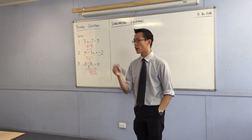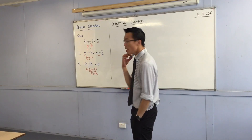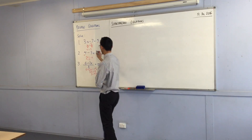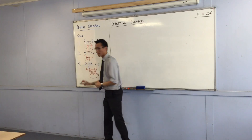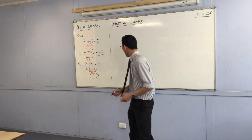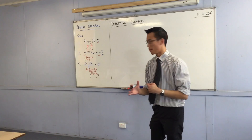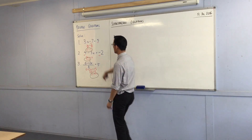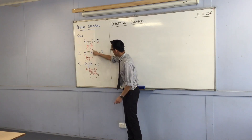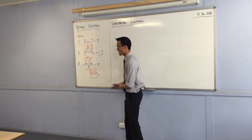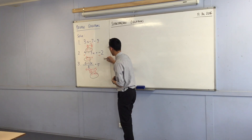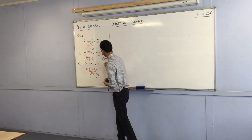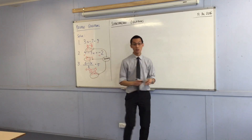Now what I want you to do, if you've got another colour, is circle all of the answers you've got — circle this and this and this with another colour. I want you to remember that if what we've asked you to do is solve these equations, then these three things I've circled are called the solutions. So I want to label them as such. When you solve, what you get is the solution.